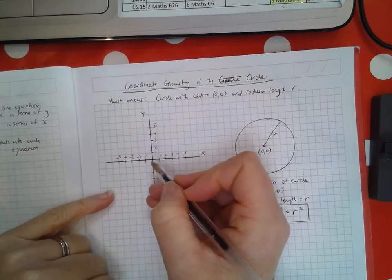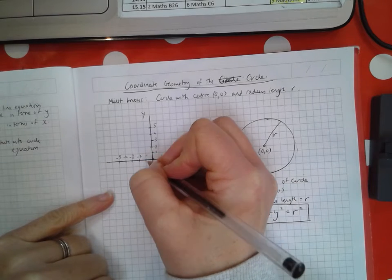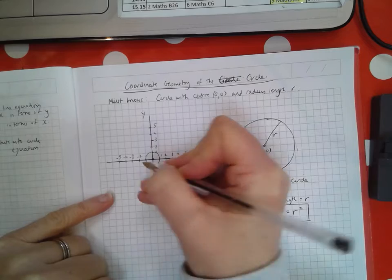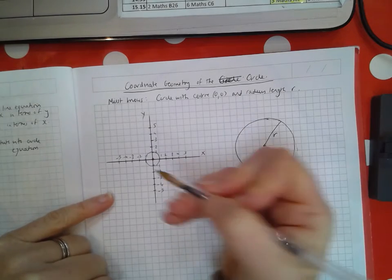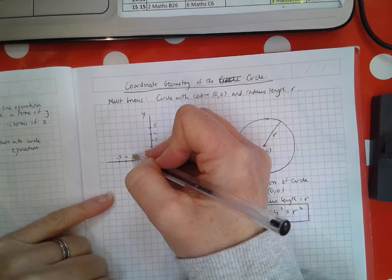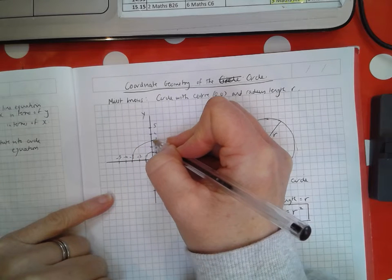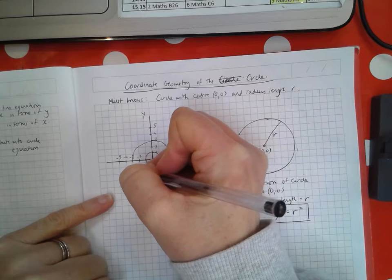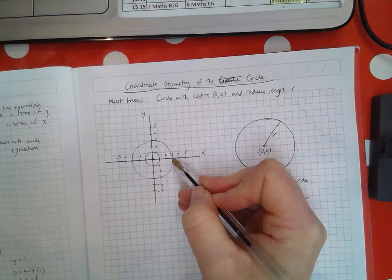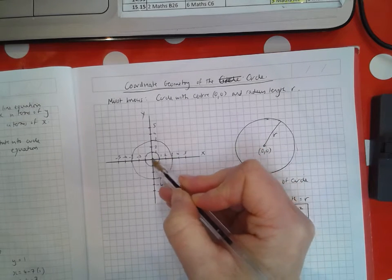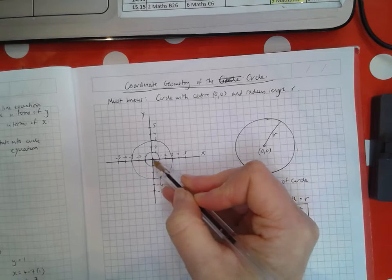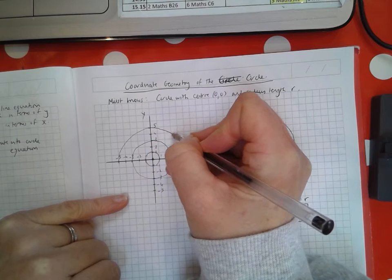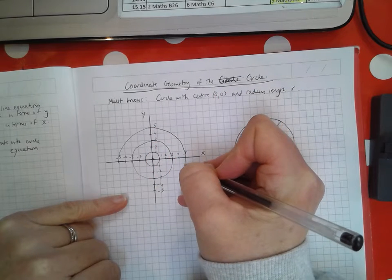For instance, if I have a circle here that has a radius of 1, that's a circle with center (0,0) and radius 1. Here's a circle with center (0,0) and radius 3. In other words, the distance from the center to the edge is 3 units. And finally, here's a circle with center (0,0) and radius 5.